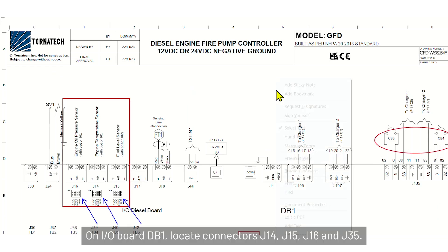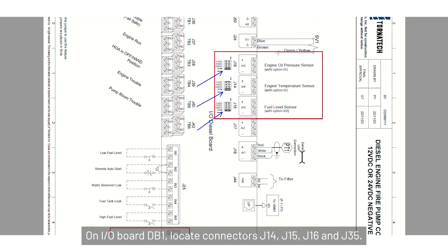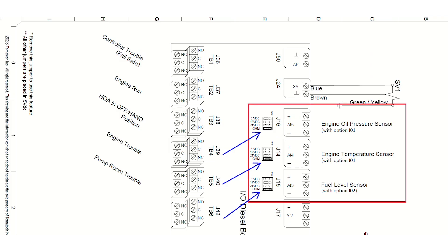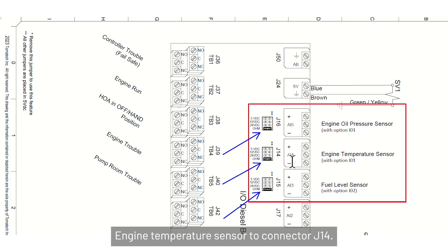On IO board DB1, locate connectors J14, J15, J16, and J35. Connect the customer-supplied devices as follows: engine temperature sensor to connector J14.